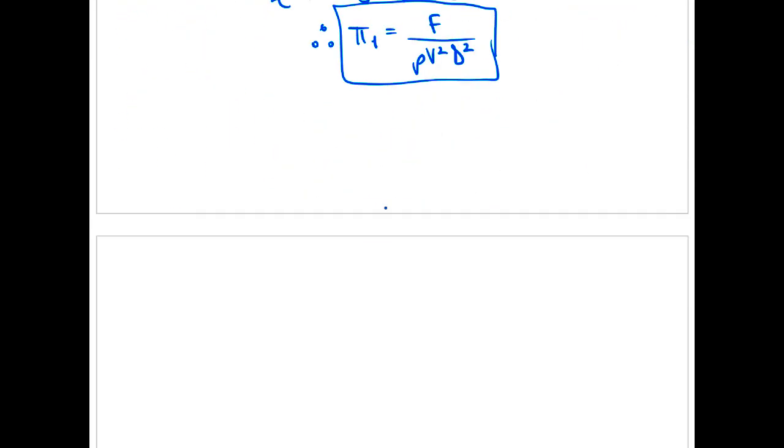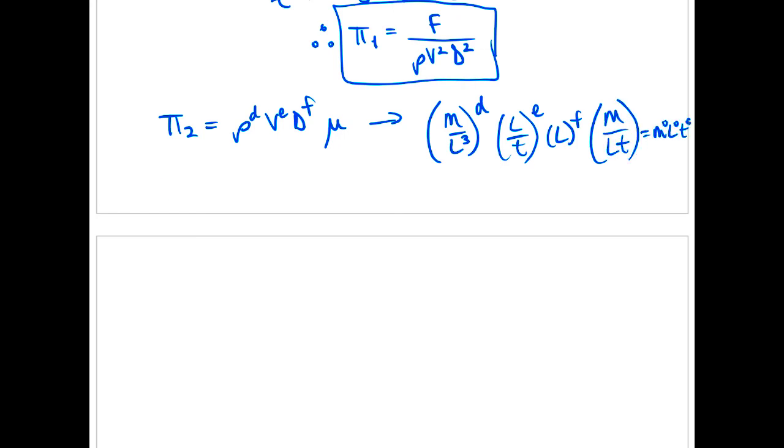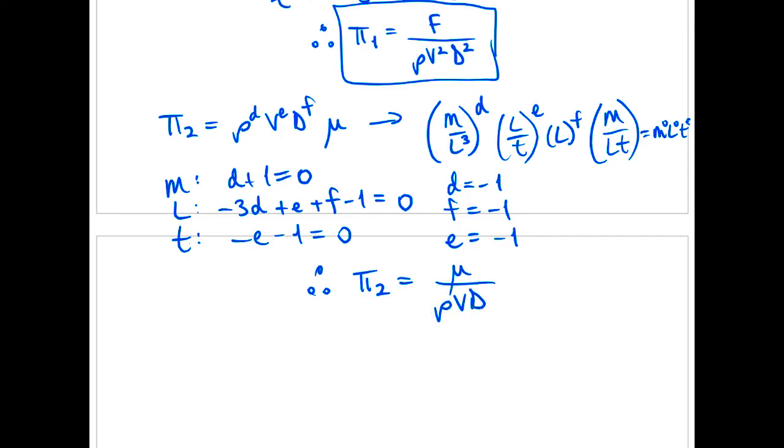Now we do the exact same thing for the second one. The only one left over was our mu, so we write out the pi two term for mu. And our repeating terms, we'll just use DEF because we already used A, B, and C for the exponents. Same exact thing. I'm just going to write it out here without the narration.